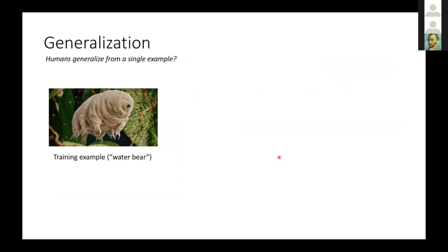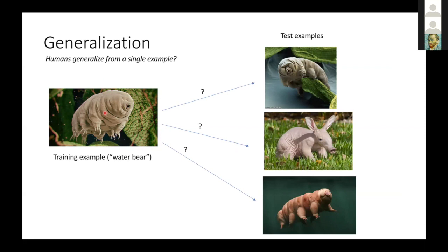One example of something a human can do wonderfully well and a computer cannot do at all, including GPT-3, is generalization from very few examples. In the computer vision community this is a well-known problem. I give you one example of something you may or may not have seen, and then query you with a bunch of test samples, and you'll be able to figure out that these two are indeed examples of this water bear, even though they might look quite different in color and shape. You know something about legs, about the snout, and you can put things together and say this is highly likely another example of it.